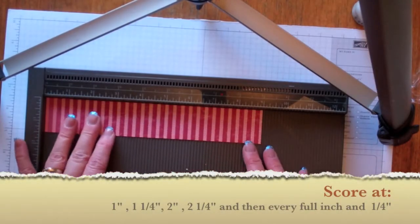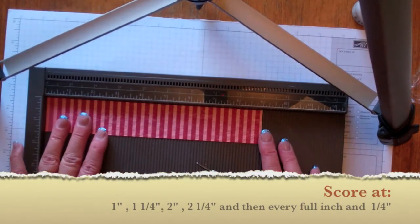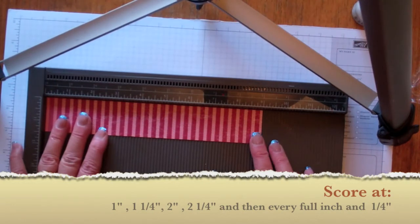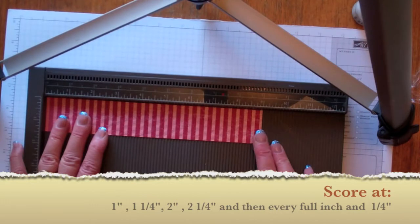You can make the pleats in two ways. I'm going to use the Simply Scored and what you want to do is score this strip at one inch, quarter inch, two inches, two and a quarter, three, three and a quarter and so on until you get to eight and a quarter. I will have the dimensions on the screen in front of you.